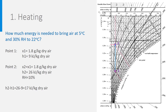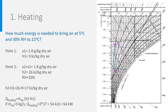When handling air, we are handling flow rates rather than masses — the air is flowing. If we want to heat an air flow rate of 3 kilogram per second from point 1 to point 2, the heat needed will be Q equals mass flow rate times H2 minus H1, which is 3 times 17 equals 51 kJ per second, the same as a heating capacity of 51 kW.